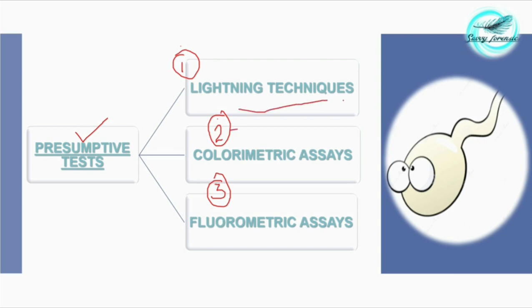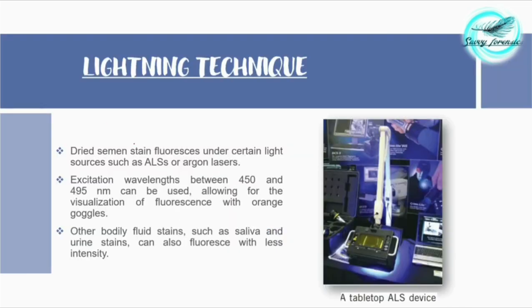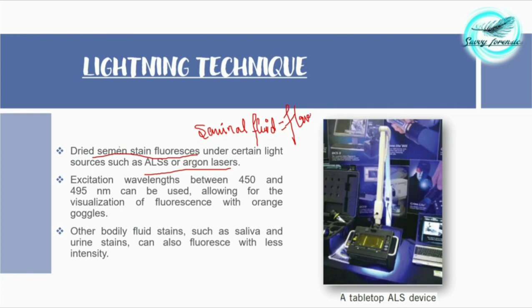For lighting techniques, we make use of alternate light sources for the detection of seminal stains under dark conditions. Dried semen stains fluoresce under certain light sources such as alternate light sources or argon lasers. The seminal fluid, which constitutes 60% of the total seminal stain, contains components called flavins, and these flavins are responsible for giving fluorescence.